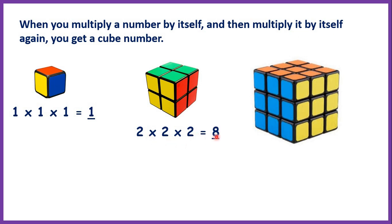2 times 2 times 2 is 8 because 2 times 2 is 4 and then 4 times 2 is 8.